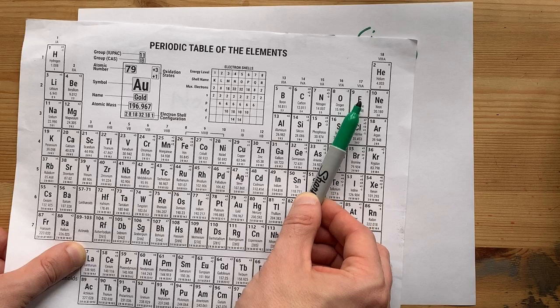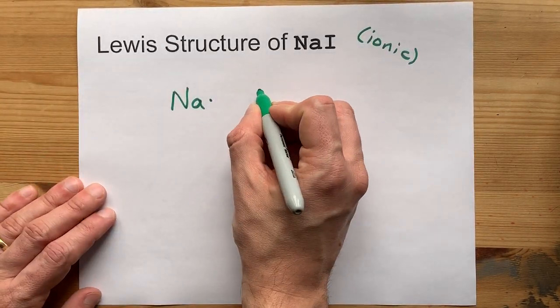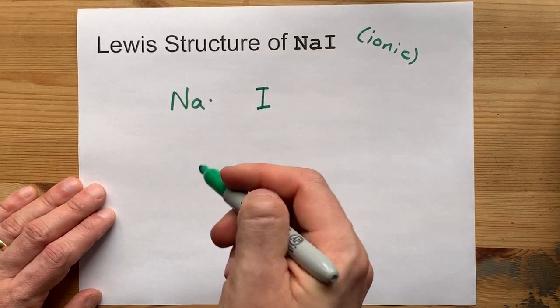Iodine is in group 17. All of these atoms bring seven valence electrons with them. I remember that because it's group 17.